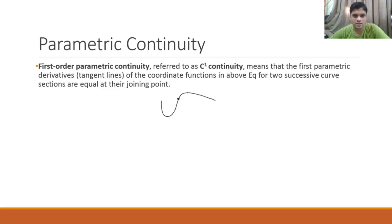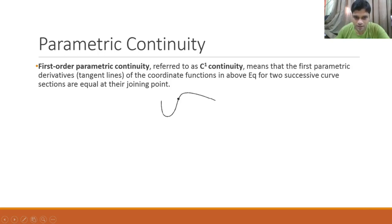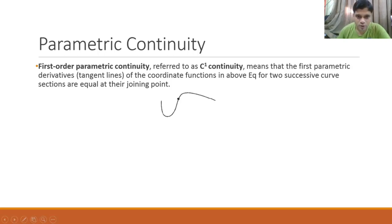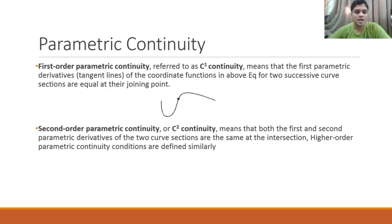The next condition is first-order parametric continuity, referred to as C1 continuity, which means the first parametric derivatives — the tangent lines — of the coordinate functions are equal at their joining point. For example, if we draw a tangent at a particular joining point, it goes in the same direction for both curves. From an equation point of view, the first derivative at that point is equal for both curves.